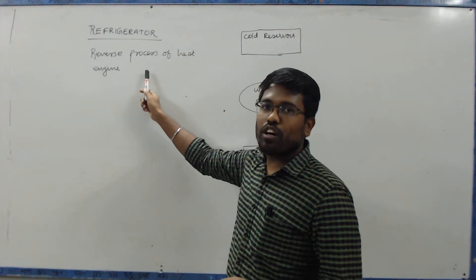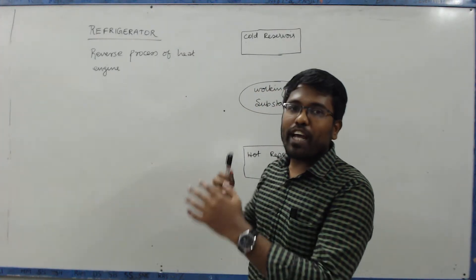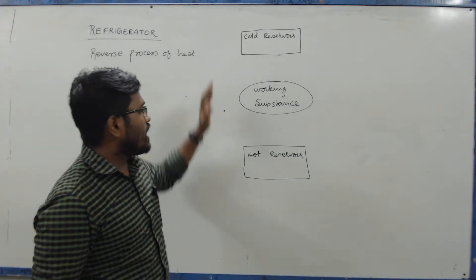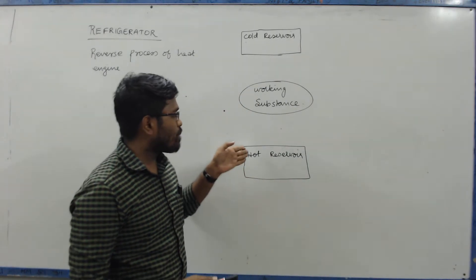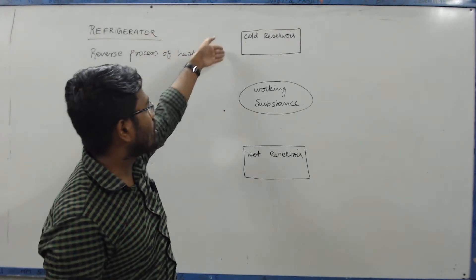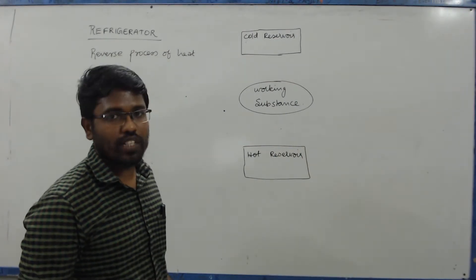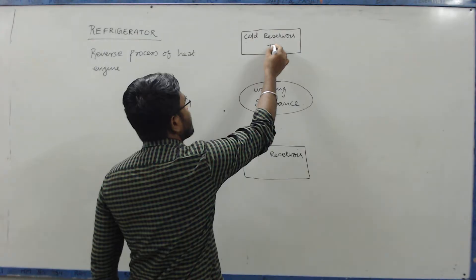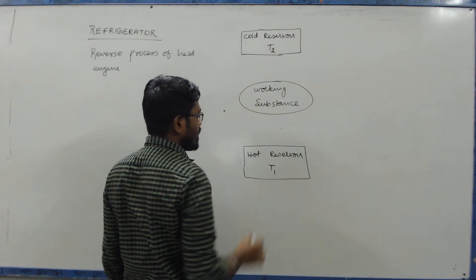The refrigerator is a reverse process of the heat engine. The heat engine transfers heat from hot to cold. But in the refrigerator, heat is transferred from the cold reservoir to the hot reservoir. The cold reservoir is denoted as T2 and the hot reservoir as T1.